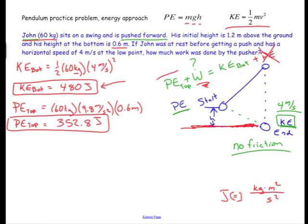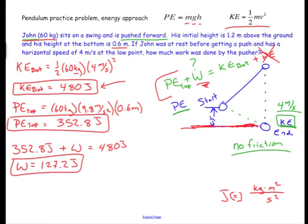So if I go and actually use this equation that I talked about before, I would say the PE at the top, 352.8 joules, plus this unknown work that I'm trying to find is got to be equal to the 480 joules that I had at the bottom. So my work is 127.2 joules. That was how much added energy I had.